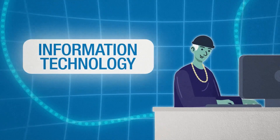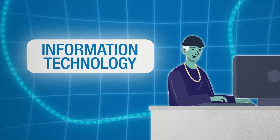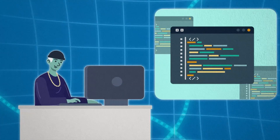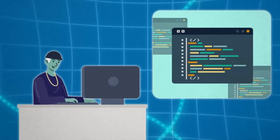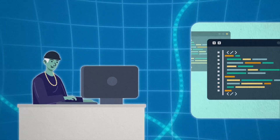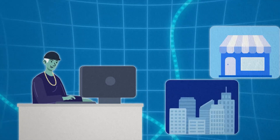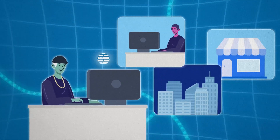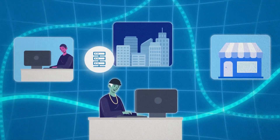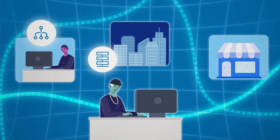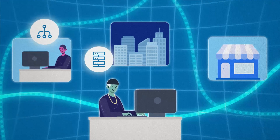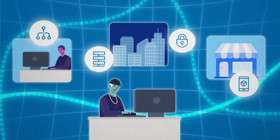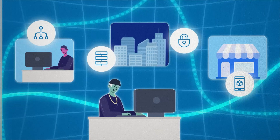Information technology is all about how we apply technology to shape the future. It's implementing and maintaining what computer scientists create to support businesses, transform industries and help everyday people. Think managing databases, setting up server infrastructures for apps, developing security protocols and creating IT support systems.